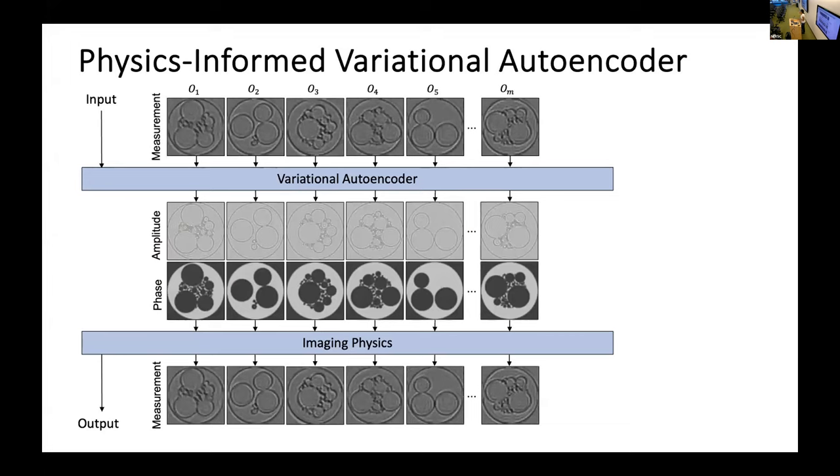So what we turn to is we turn to self-supervised deep learning. And in particular, my group has developed what we call the physics informed variational autoencoder. And to take a very high level bird's eye view of the mathematics of this, we have our low resolution measurements. So a single image for every field of view. And what we do is we train our system. So our system is everything in these blue boxes and kind of this middle part here. So we train this whole system such that we put in our input, our low resolution image, and we want our output to be that same low resolution image. And an intermediate output of this framework is the high resolution phase and amplitude object.